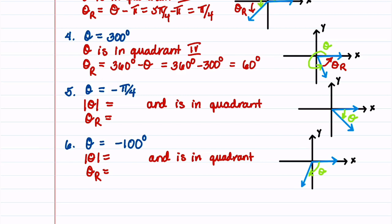In our last two examples, theta is negative. In our fifth problem, theta is equal to minus pi over 4. Because theta is negative, we're going to work with the absolute value of theta instead to determine the formula for finding theta sub r. The absolute value of theta is pi over 4, which is located in quadrant 1, so theta sub r equals the absolute value of theta, which is pi over 4.